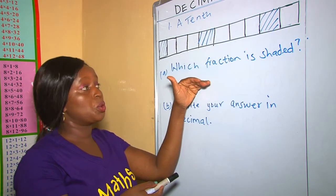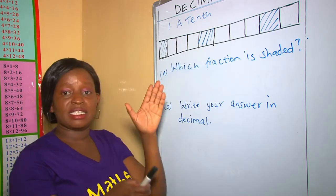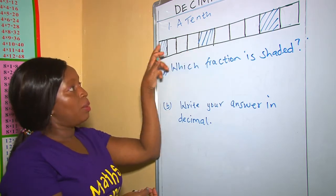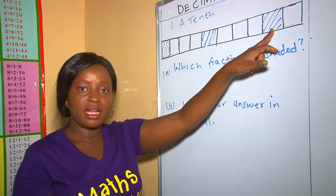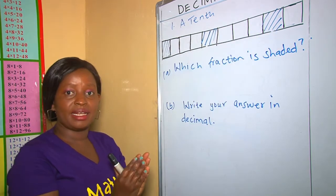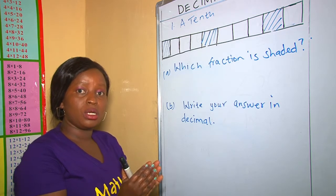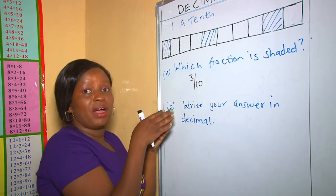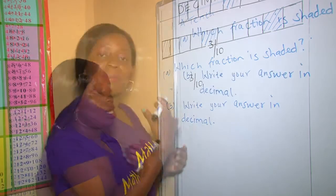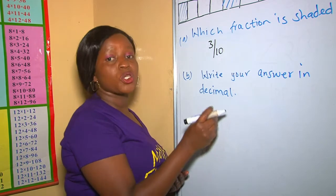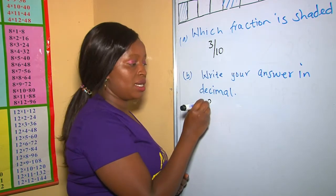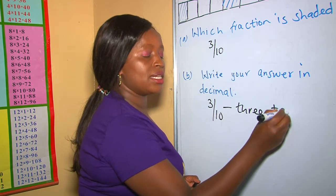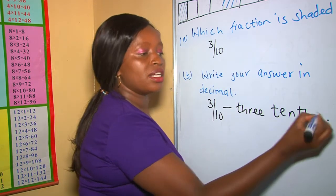In this question, we are supposed to write the shaded part as a fraction of the total. If you look at the diagram, 3 parts have been shaded out of all the parts, and all the parts are 10. So to write it as a fraction, we are going to write 3 out of 10, because 3 parts are shaded out of 10 parts. Before writing it as a decimal, first you write the fraction in words — that is, 3 tenths.